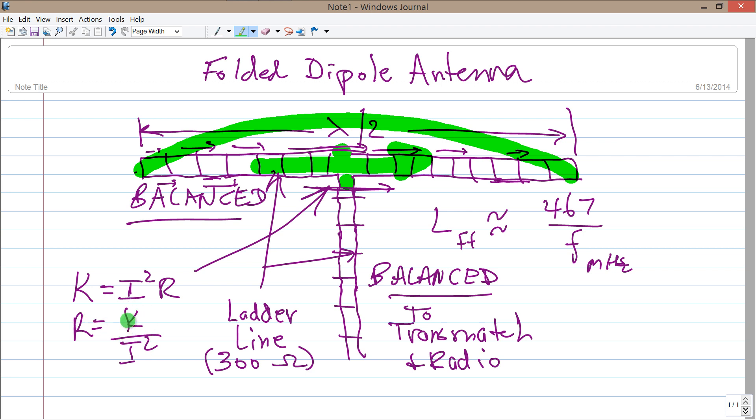So what you're ending up with is you square the current. If you square one half, then you get one fourth. So you have that constant divided by a fourth means that this resistance, R, at the feed point is going to be four times as great as it would be in an ordinary single conductor dipole. So instead of 75 ohms, it's going to be about 300 ohms.